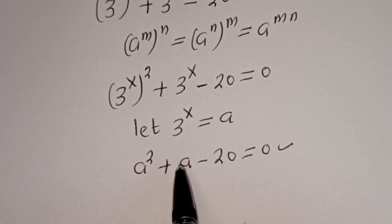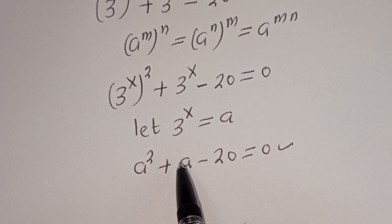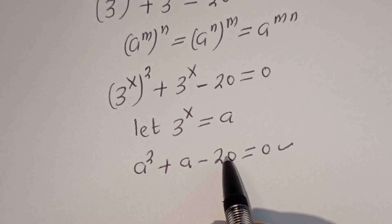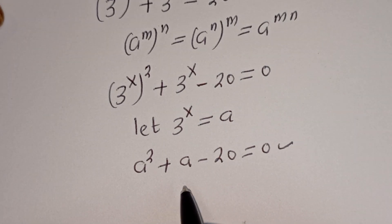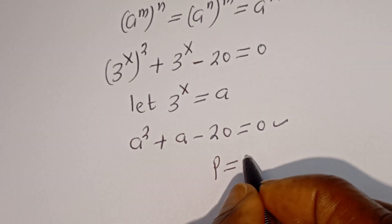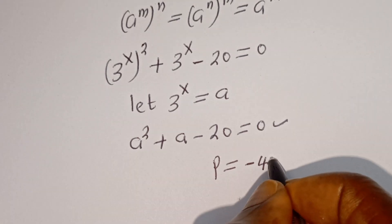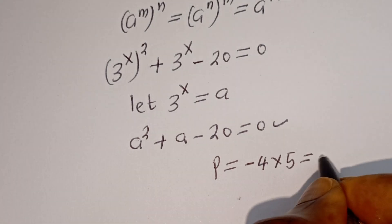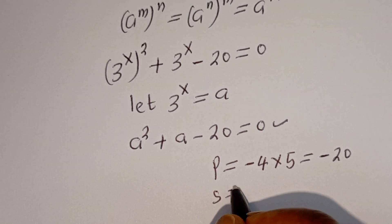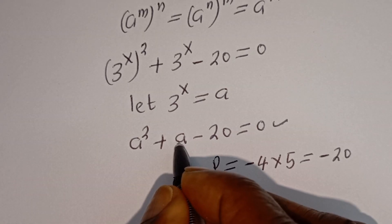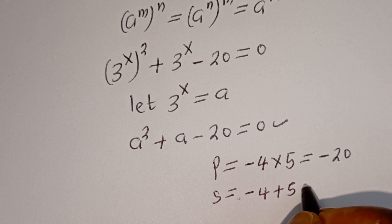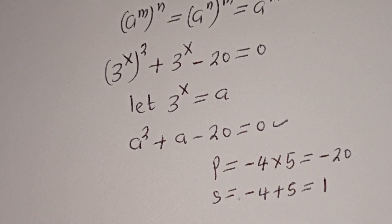This is a quadratic equation. We can solve this using the factorization method or the quadratic general formula. Using the factorization method: the product must equal minus 20, which is minus 4 multiplied by 5. The sum must equal 1 — since the coefficient of a is 1 — which is minus 4 plus 5 equals 1.